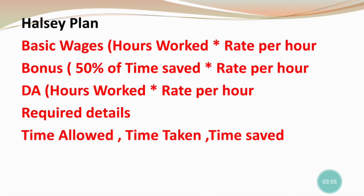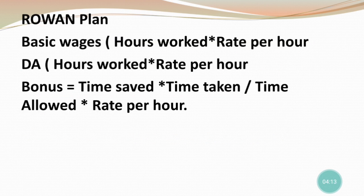The three required details are: number one — time allowed, number two — time taken, and number three — time saved. If you calculate these three things in the question, then you will have no difficulty with the Halsey plan. So we need time allowed, time taken, and time saved.